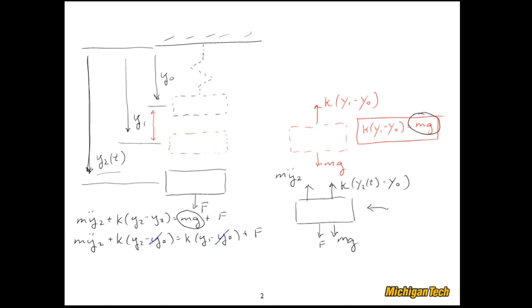This k y0 cancels with that one. And also, if I go ahead and define my displacement from the gravity-stretched configuration, so from the red block down to the black block, and if I define that as being y of t is equal to y2 of t minus y1, and I left in those time dependencies just to drive that point home.